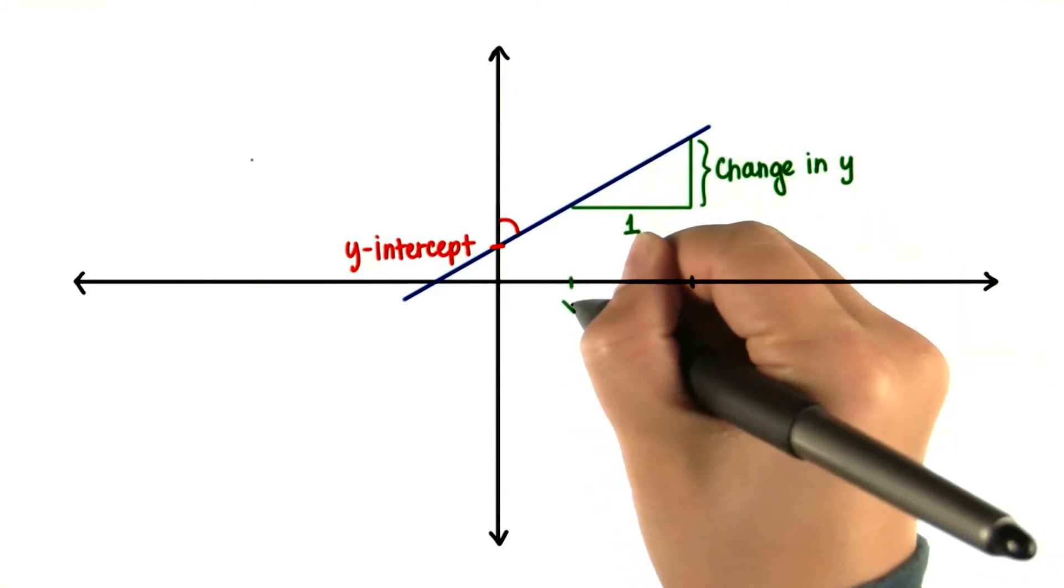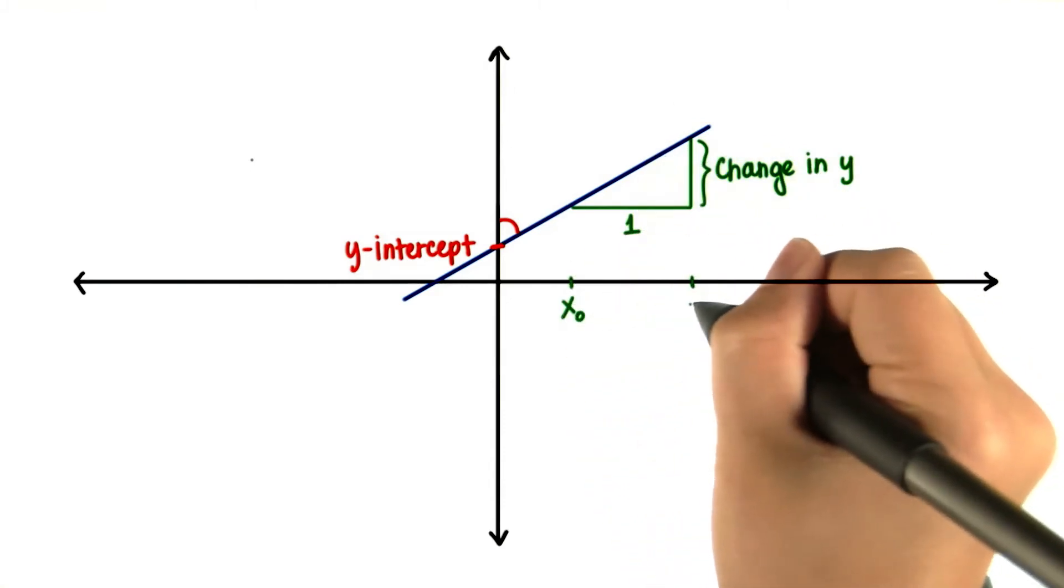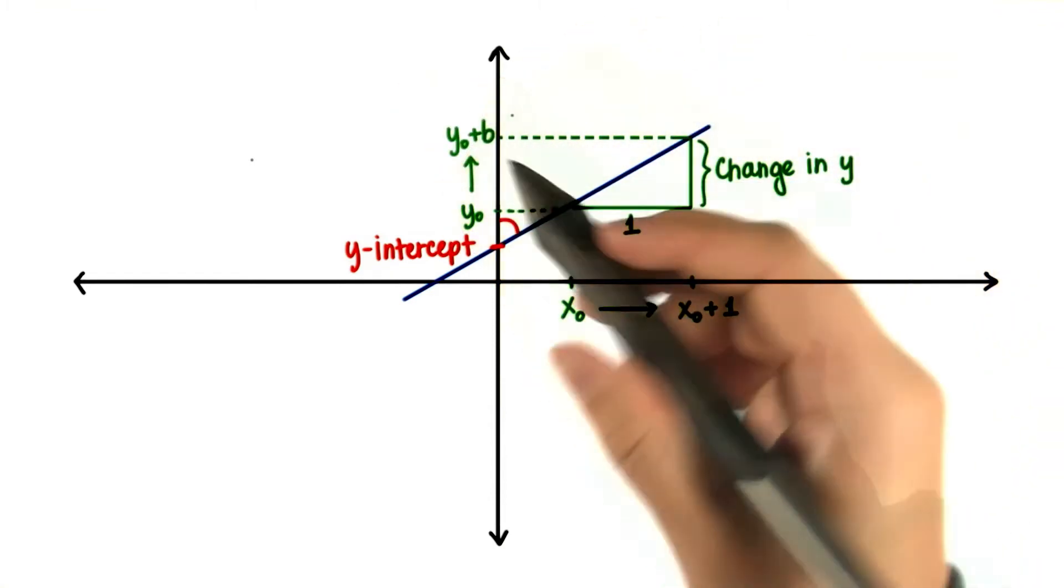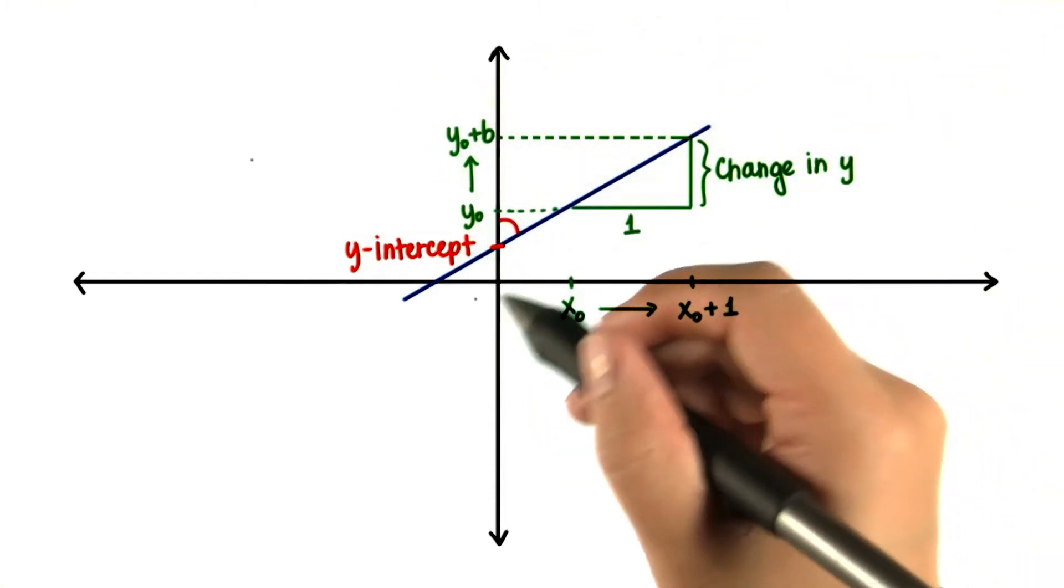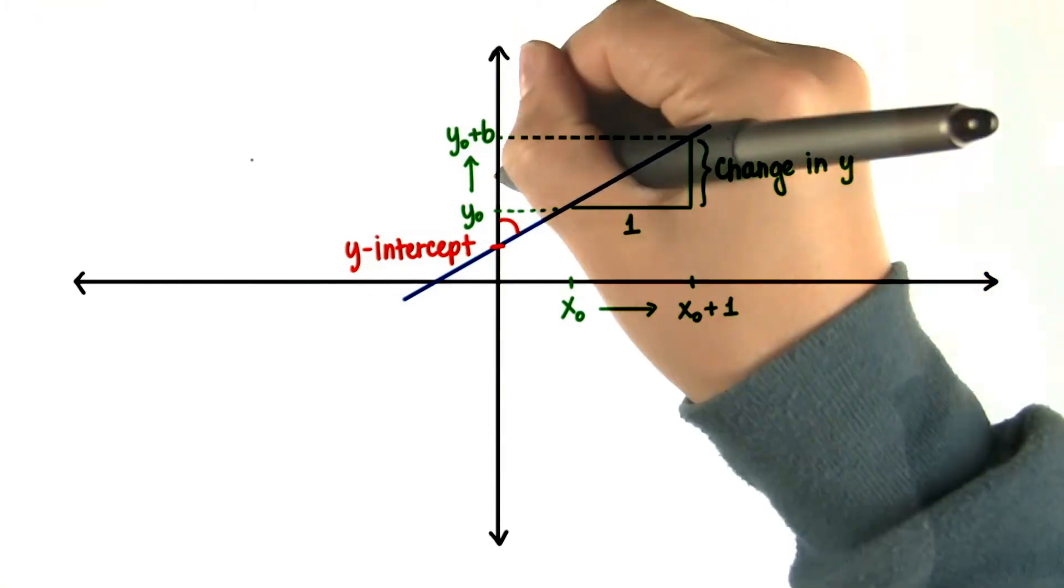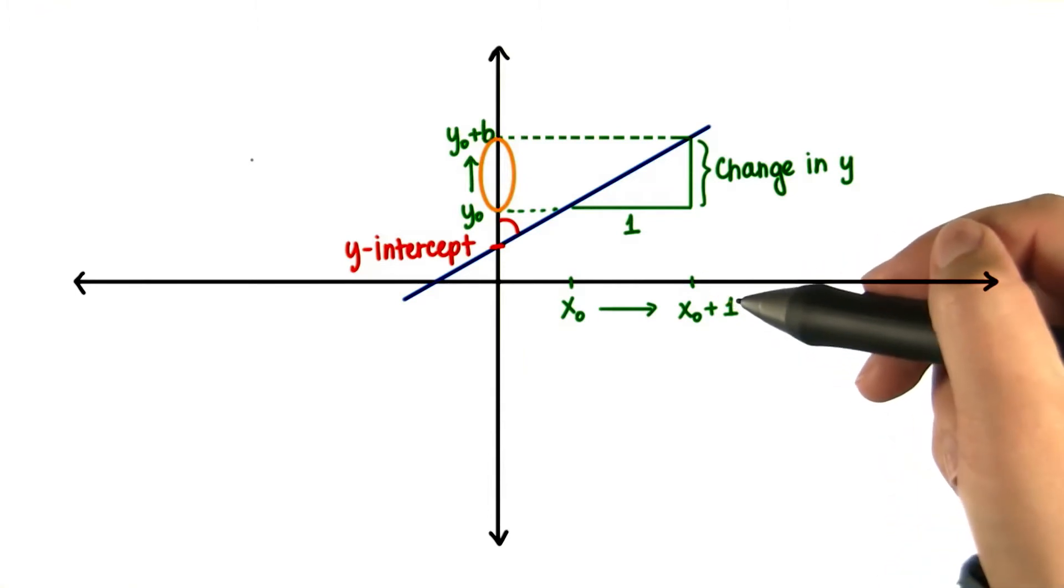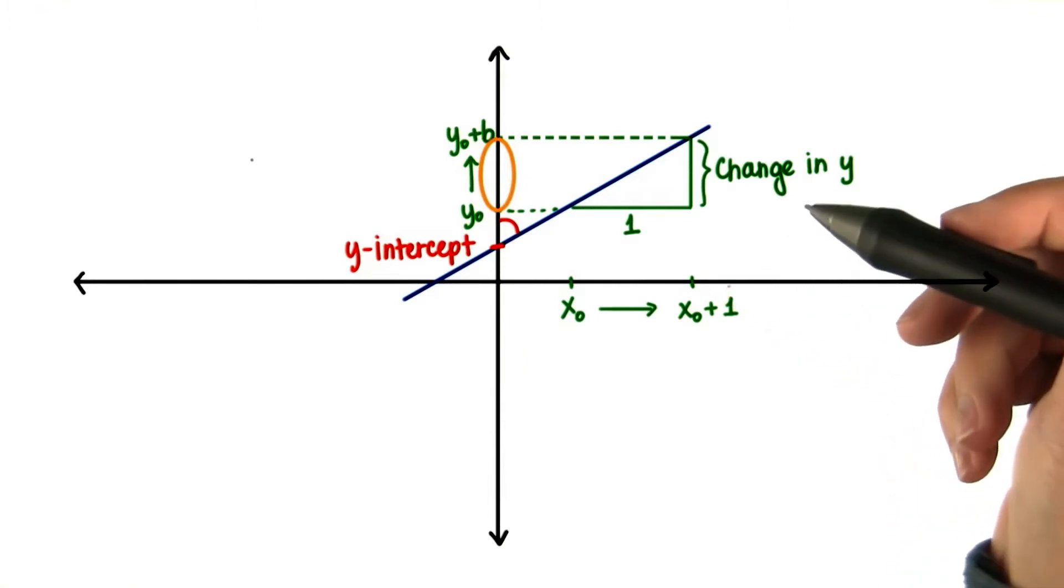In other words, when x moves one unit from here to here, y changes from here to here. Note that this is a positive relationship, and we want to find what's the change in y when x increases by one unit. That's the slope.